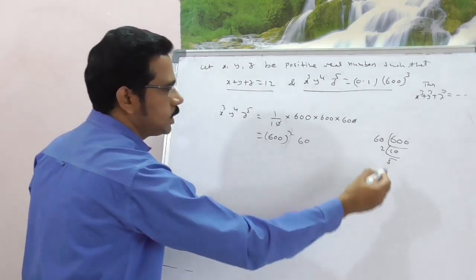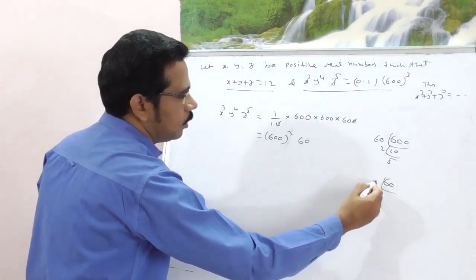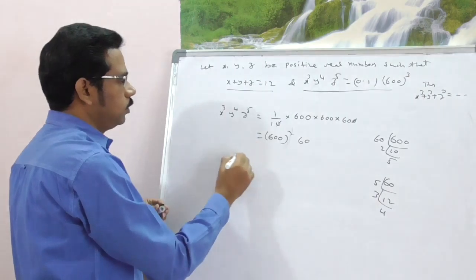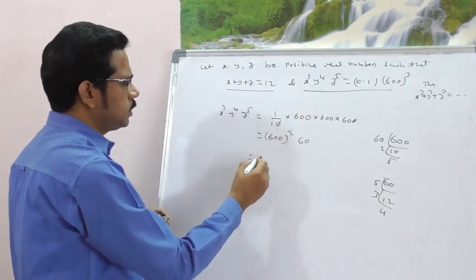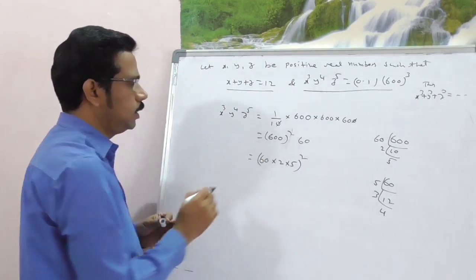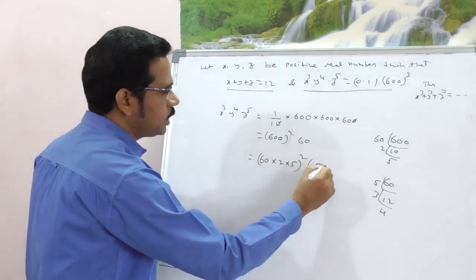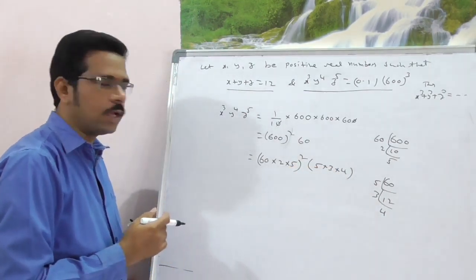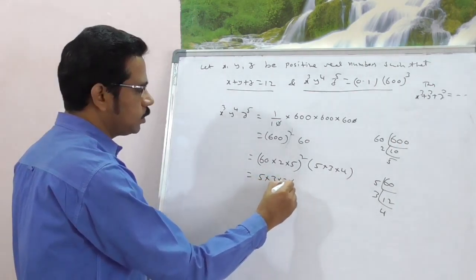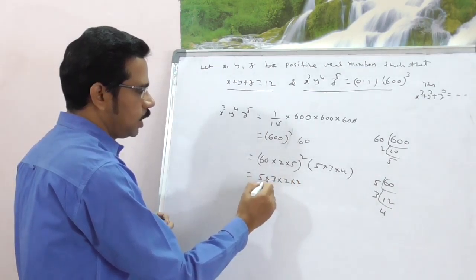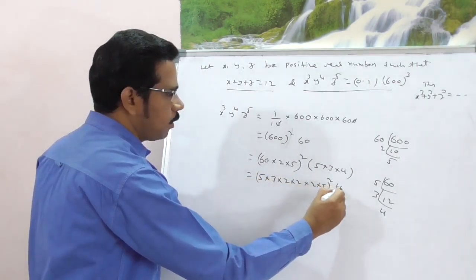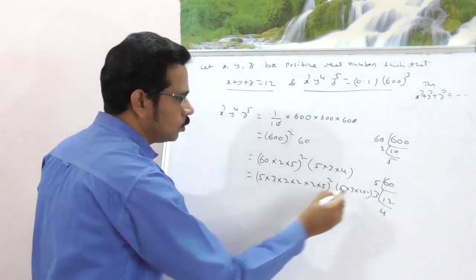Therefore, again this 60 can be in terms of 5, 12, 3, 4. 4 is nothing but 2. Now just observe, just general calculation this is. First one is 660 of 2 of 5 whole square. This 60 can be written as 5 into 3 into 4. Okay, now once again, this 60 is 5 into 3 into 4 can be written as 2 into 2 is 60. 20, 15, 4. 60 into 2 into 5 whole square. This I am writing 5 into 3 into 2 into 2.